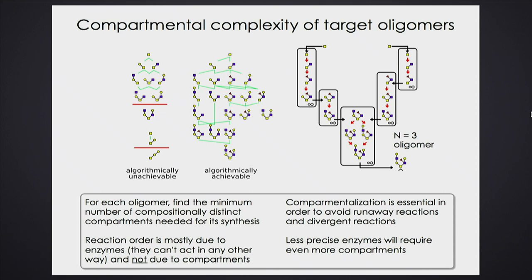How many compartments does it take? You take these growth orders, find the minimal number of depth-first stretches — this structure turns out to be complexity three: you need three compartments to make it, and you can't make it in fewer.